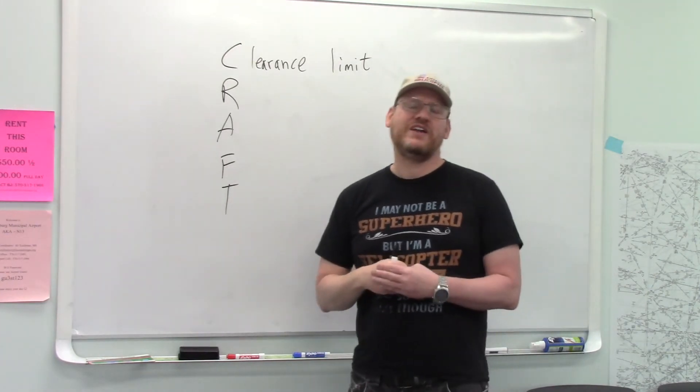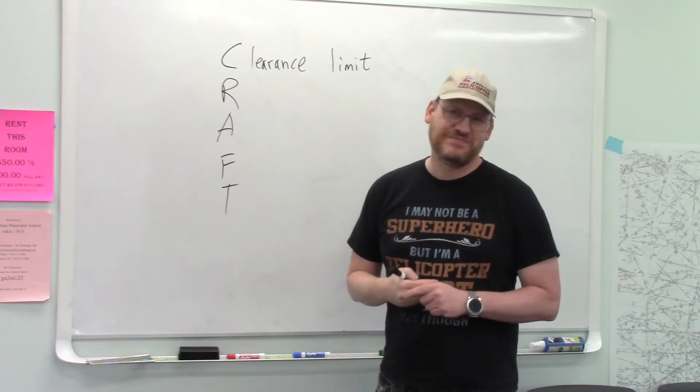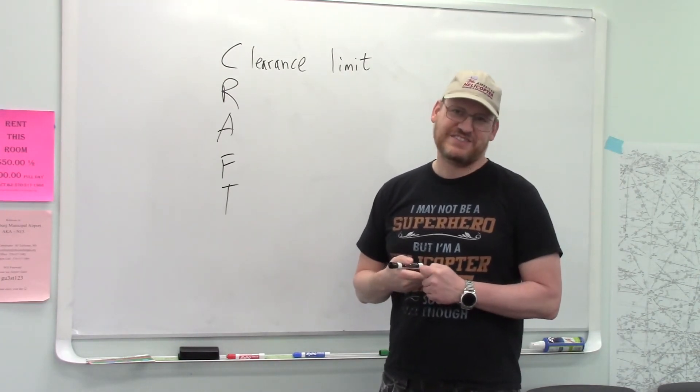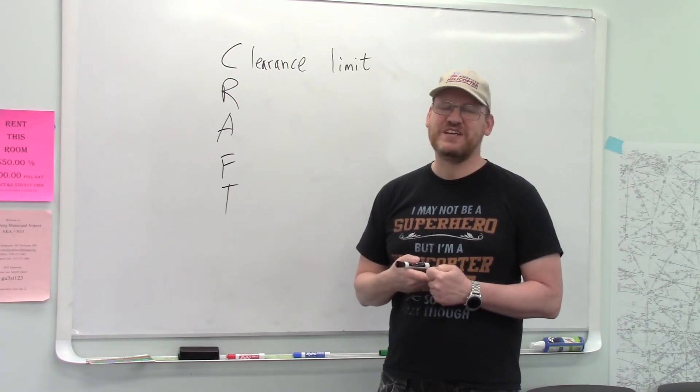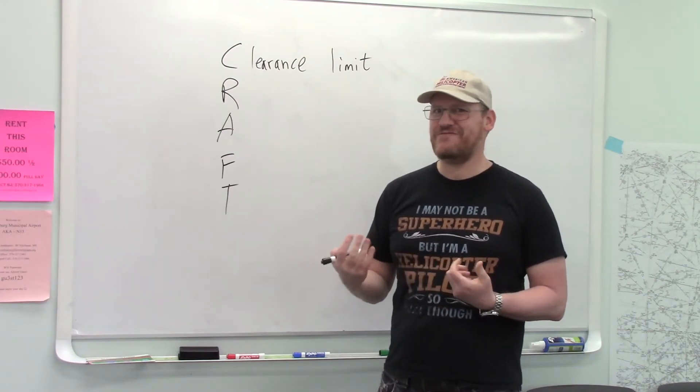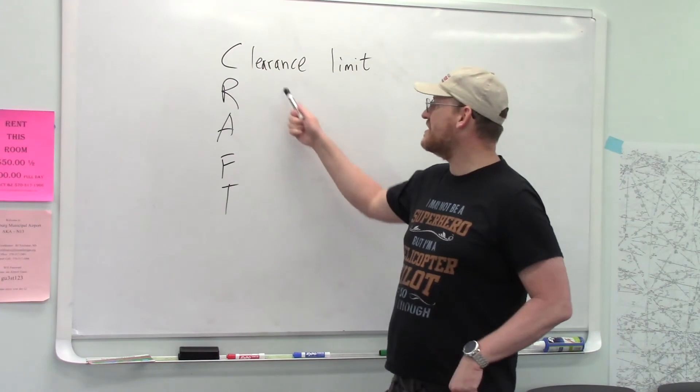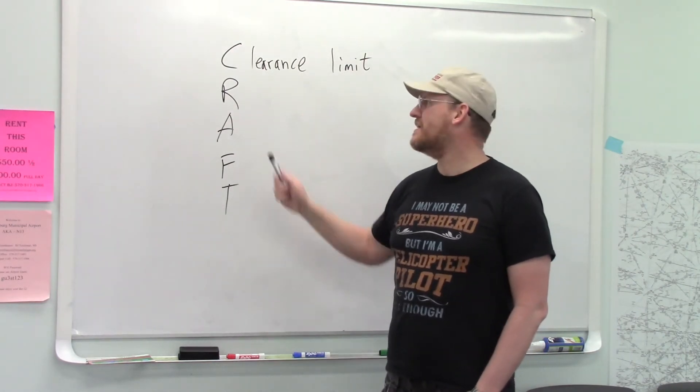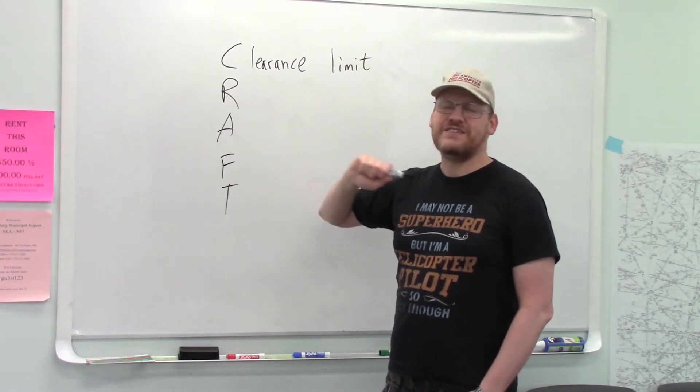So what is that limit? It could be your destination if it's close. But let's say I'm going to go on a thousand-mile trip. They're not going to clear me to my destination. They're going to clear me to some intermediate fix. So you're cleared to your clearance limit.